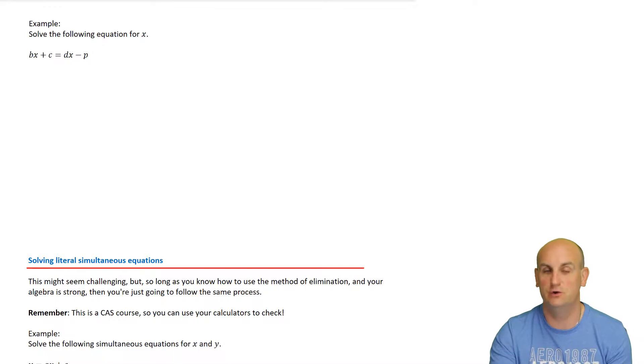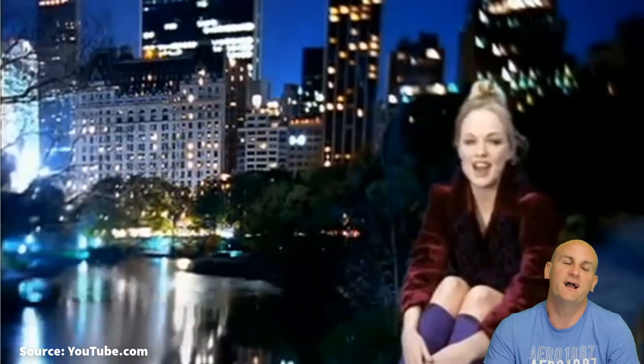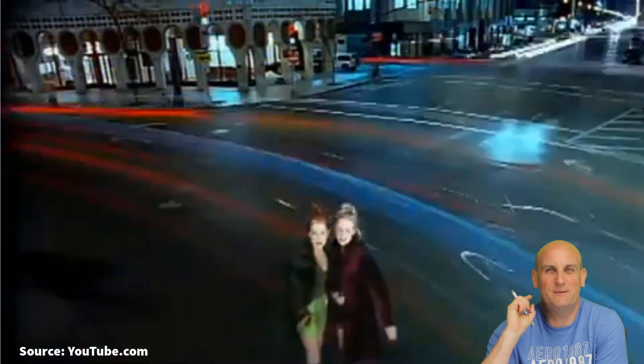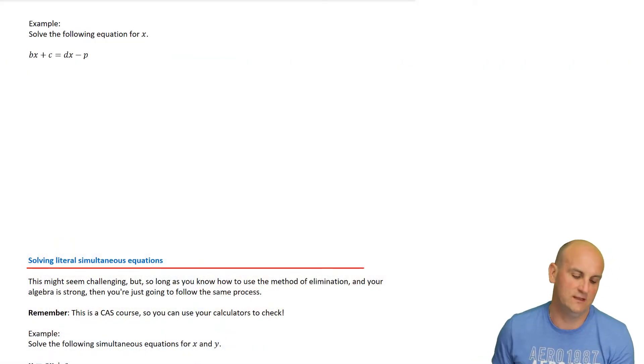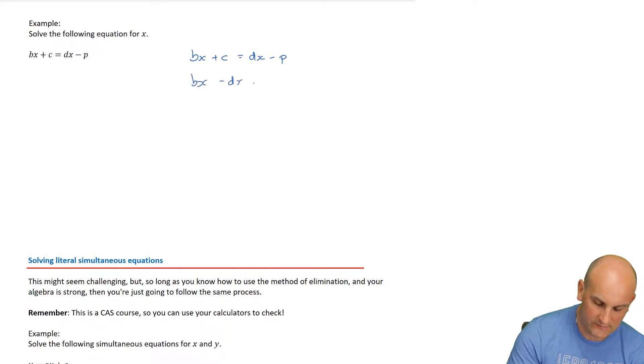Moving on, solve the following equation for x. We've got two x's again. Using my favorite Spice Girls two becomes one reference. So bx plus c equals dx minus p. First thing I'm going to do is move my x terms onto one side. So bx minus dx plus c equals negative p. Now bx minus dx equals negative p minus c. I've got my x terms both on the same side.